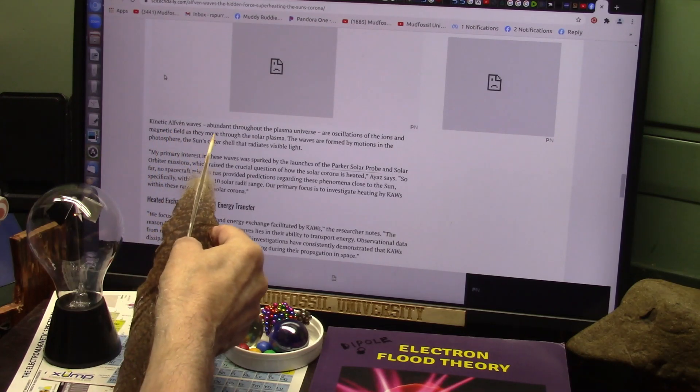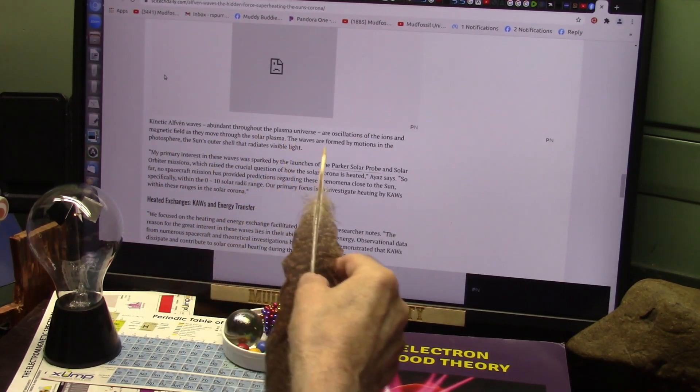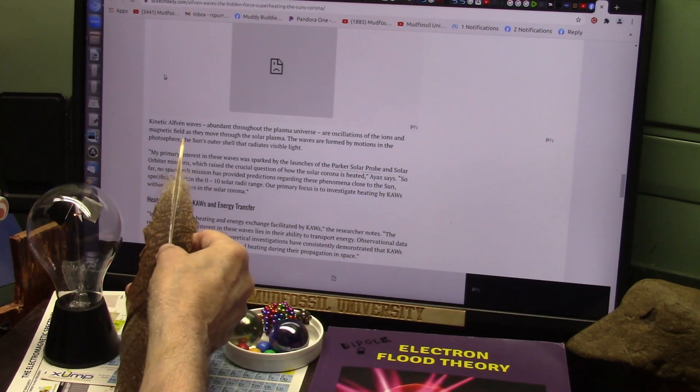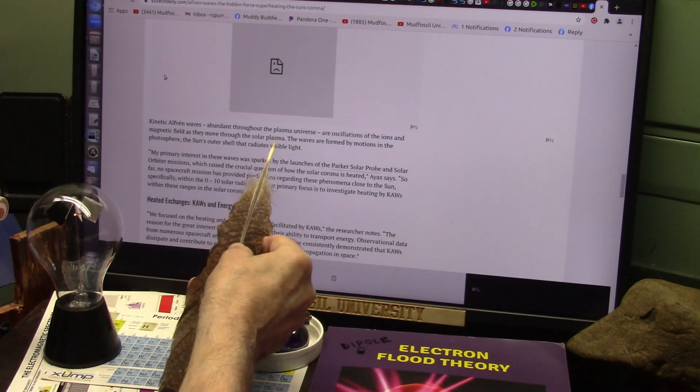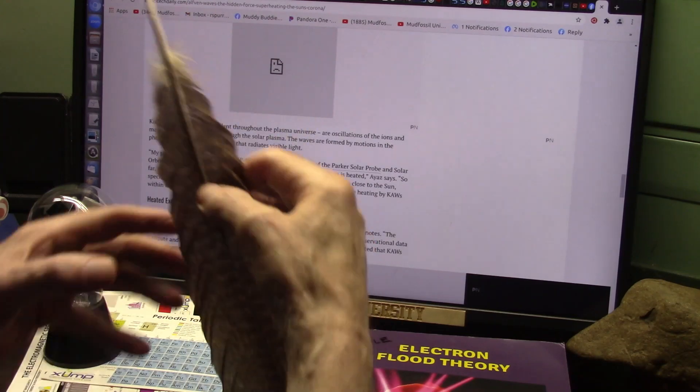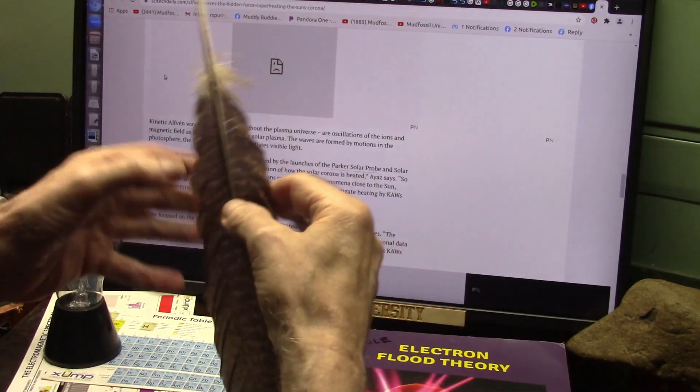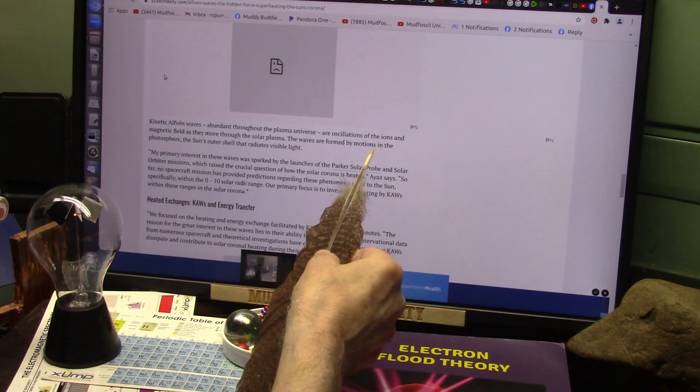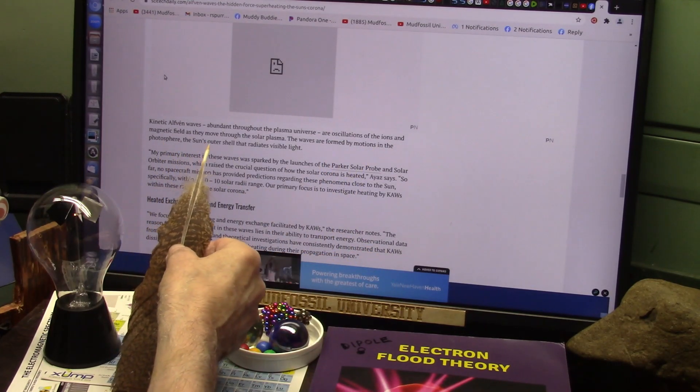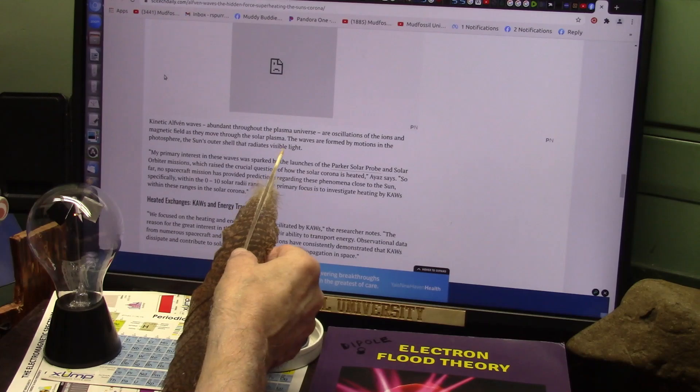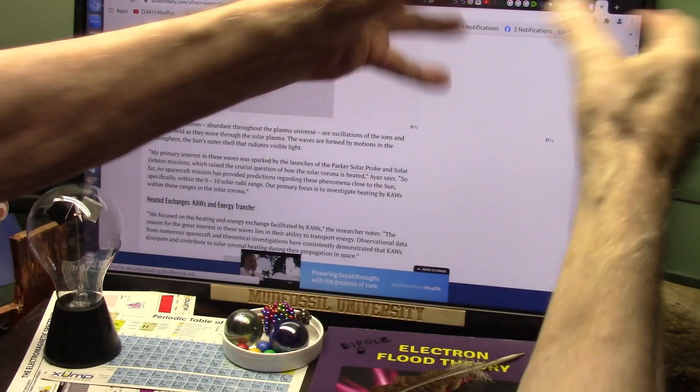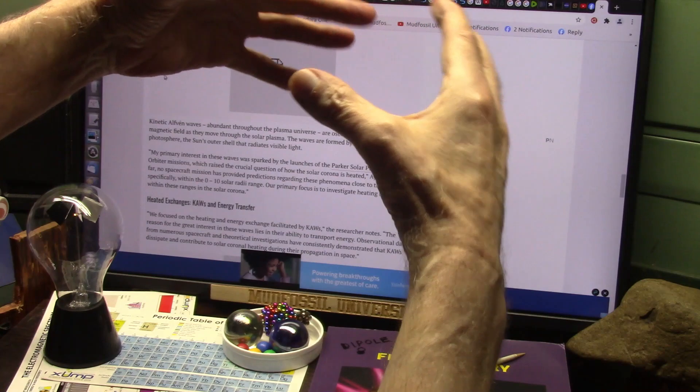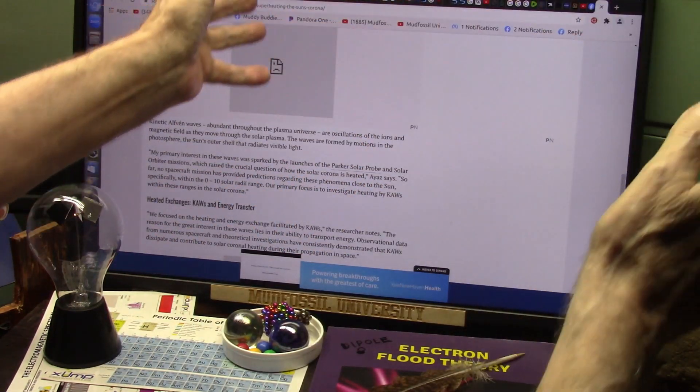They're saying these kinetic waves, or whatever you call them, abundant throughout the universe, are oscillations of the ions and magnetic field as they move through the solar plasma. Everything, it's not just solar plasma, it's everywhere in space. The waves are formed by motions in the photosphere, the Sun's outer shell that radiates visible light. It's because it's plowing through everything in space.